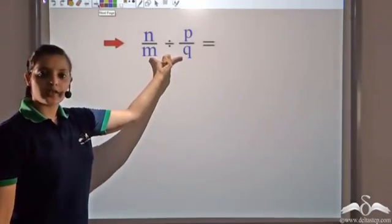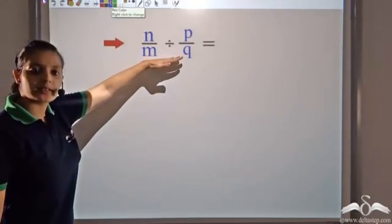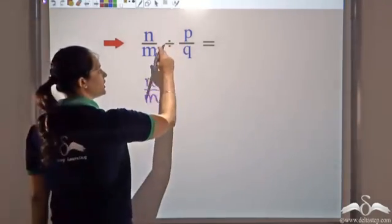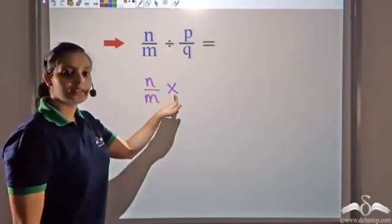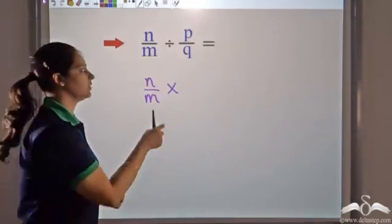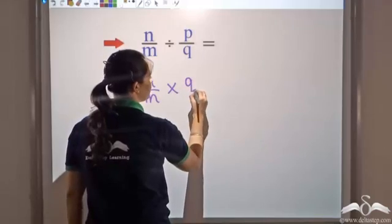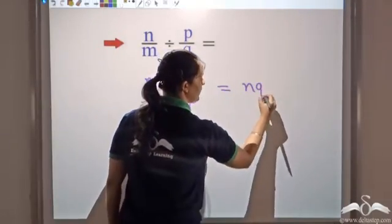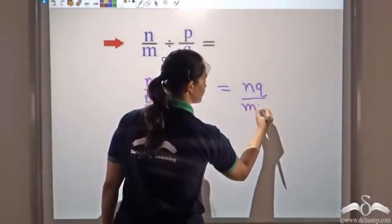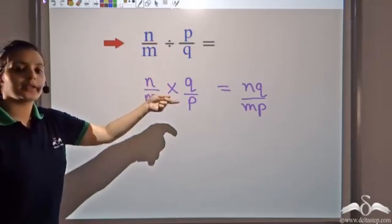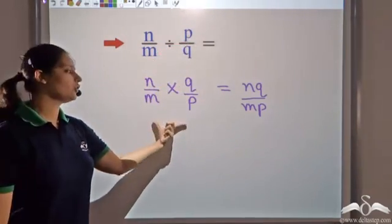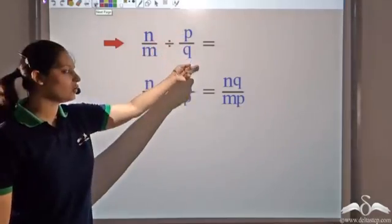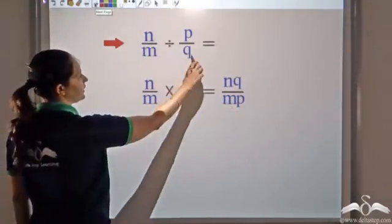Whenever you have to divide two rational numbers, it is similar to multiplication, but you write the first number as it is, convert the division to multiplication, and reciprocate the second rational number — so p by q becomes q by p. Then multiply numerators to get nq and multiply denominators to get mp. So n by m divided by p by q gives nq by mp — that is, cross-multiply nq by mp.